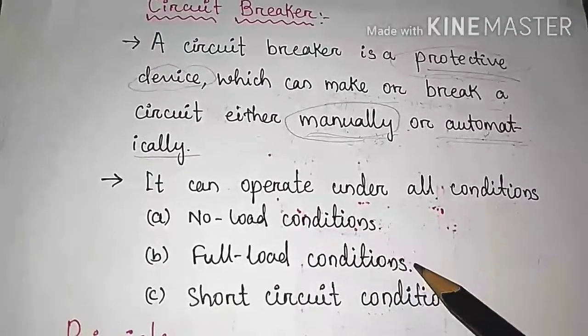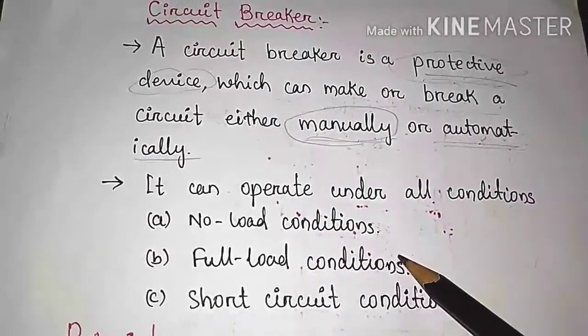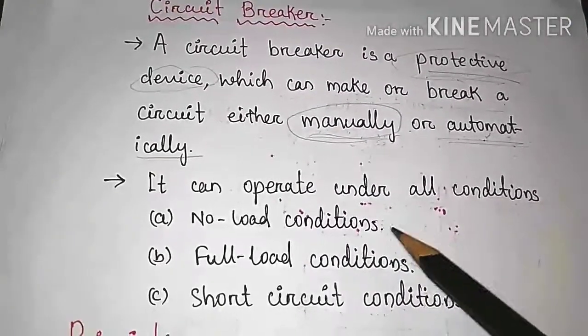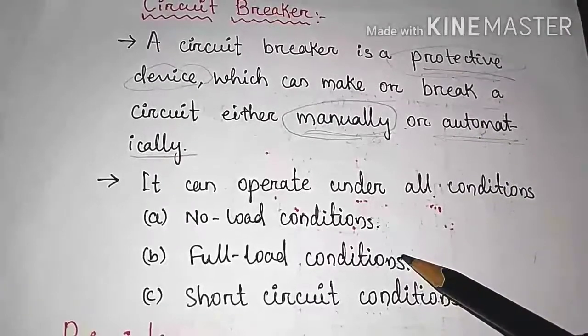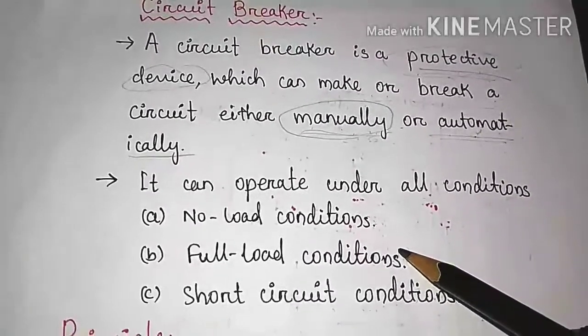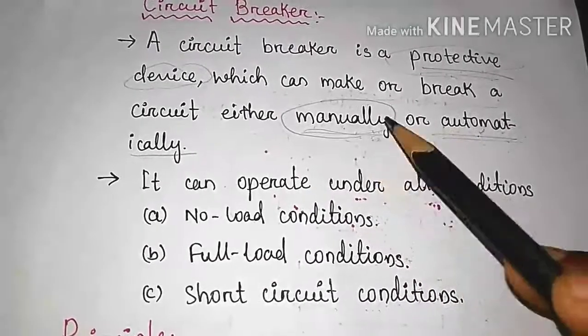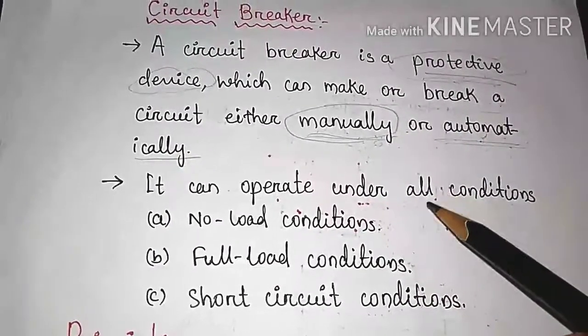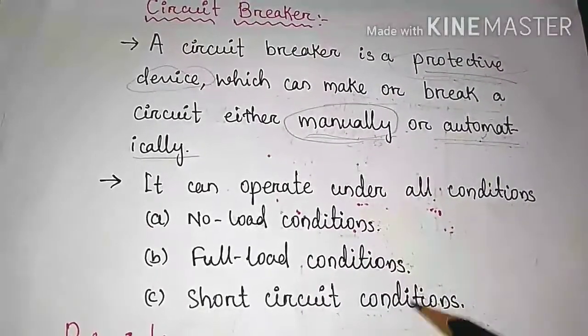Under no load condition and full load condition, we can operate the circuit breaker manually to make the circuit or break the circuit for repairing or for our purpose. We can make the circuit or break the circuit for our requirement, but under short circuit condition, it can operate automatically.